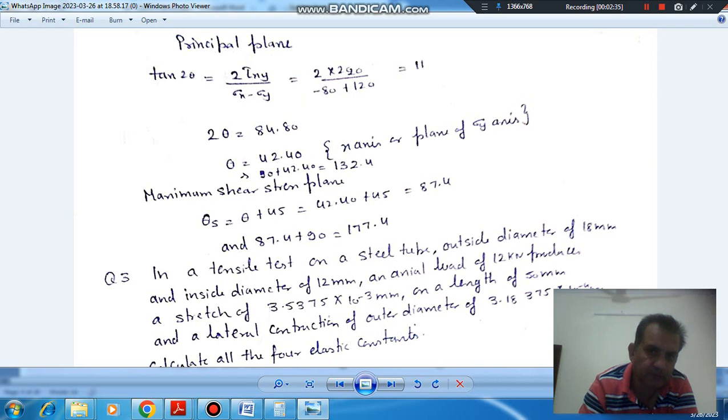And maximum shear stress plane is always adding 45 degrees to the principal plane. So if this is one of the principal planes, then the other principal plane will be 42.4 plus 45, that is 87.4.